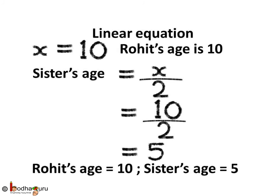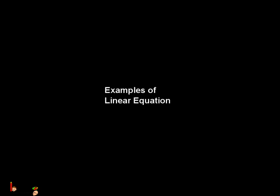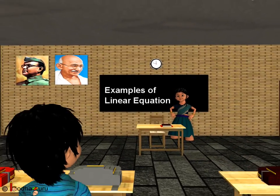Again we can check the solution by putting the value of x in the linear equation. So x plus x by 2 equals 15. Putting x equal to 10, on the LHS we get 10 plus 10 by 2. 10 by 2 is equal to 5, so LHS gives us 10 plus 5 which is equal to 15. LHS equals RHS, so Rohit's age equal to 10 and sister's age equal to 5 is correct, given that their sum is 15 and Rohit is double his sister's age. So now you know how to solve linear equations with one variable. Bye bye children.